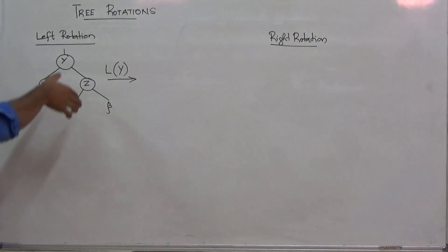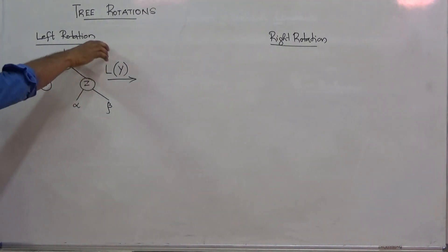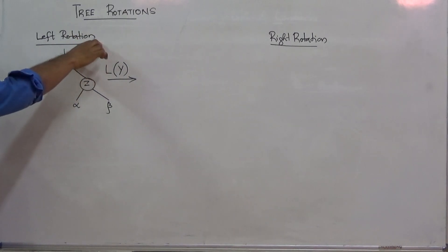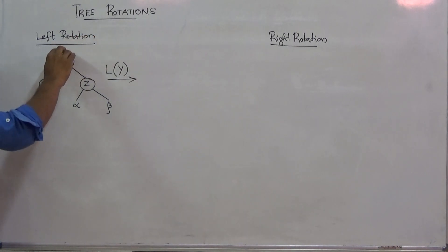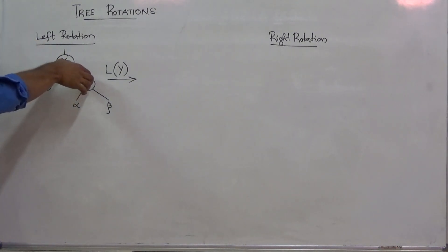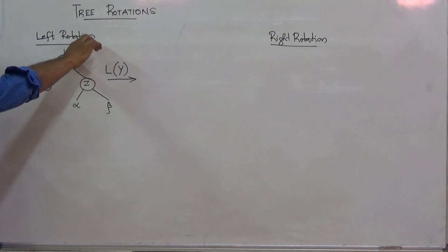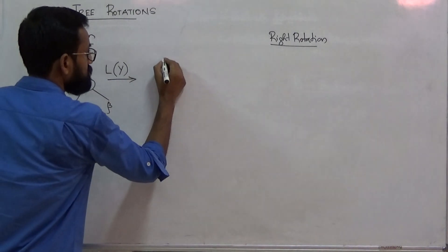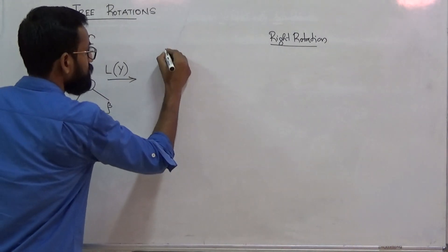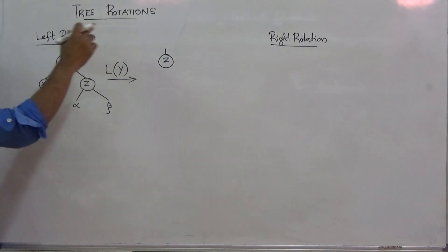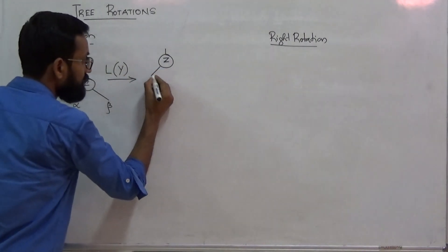You have to perform left rotation with respect to y. Whenever you perform left rotation with respect to y, z will take the position of root y. So z will become the root of the new sub-tree, and whenever z takes that position, y will become the root of its left child.